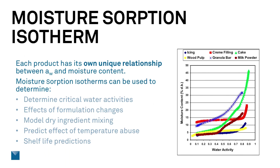Now, there is a relationship between water activity and moisture content, but it is unique to each product and formulation. This graph shows some products that have been tested and the relationship between water activity and moisture content — they are all completely different. There is icing, there is a cream filling and a cake, which sounds like the snack cake from the beginning of the webinar. All of these graphs have different shapes.